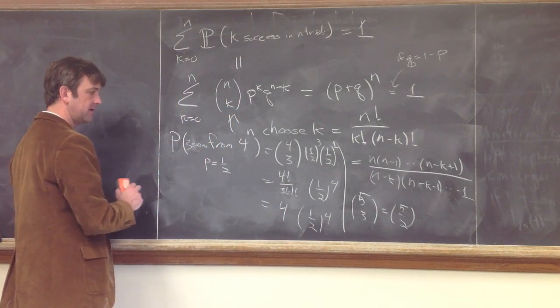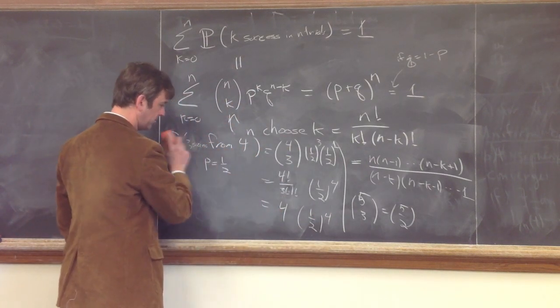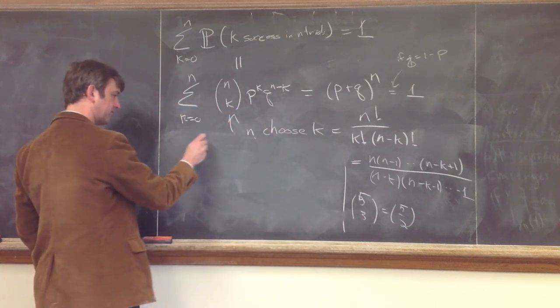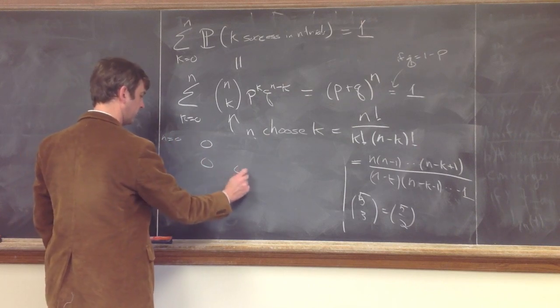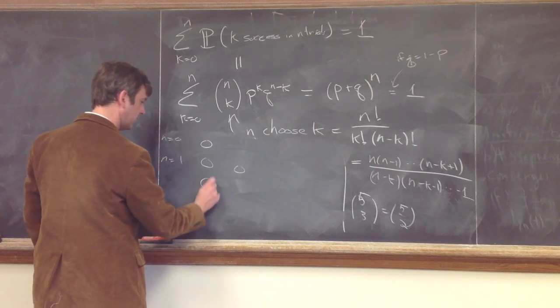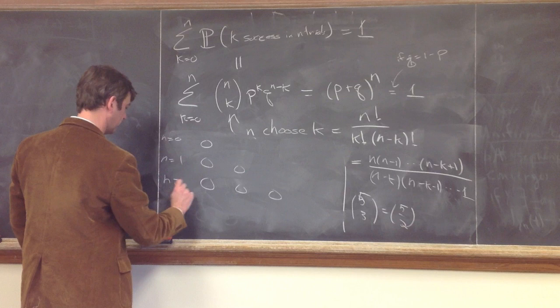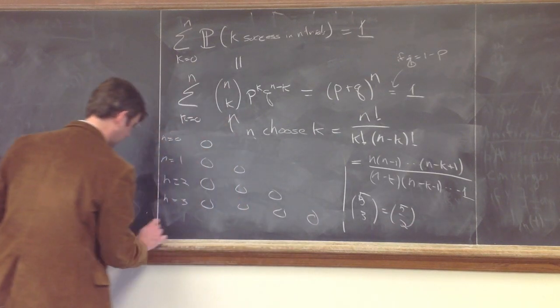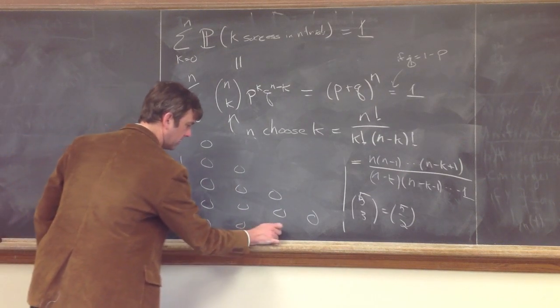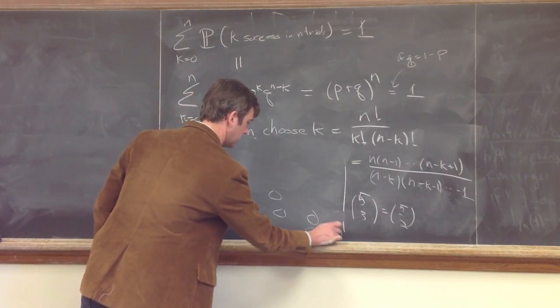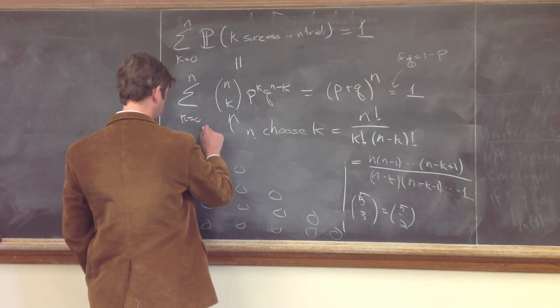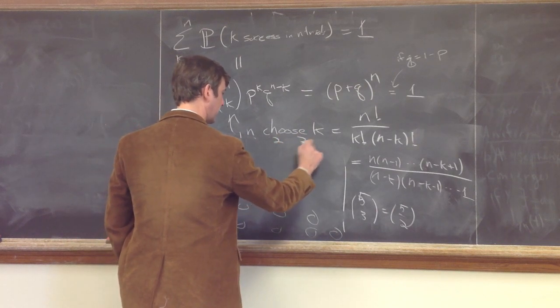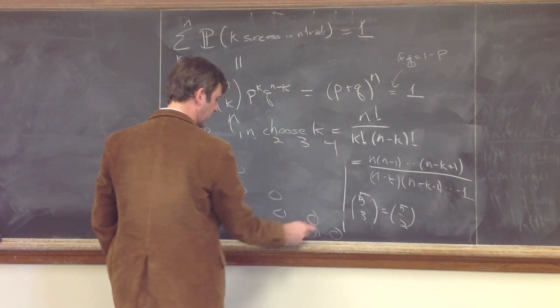And as I said, this number here, 4 choose 3, just counts the number, where we had these circles up on the board. This is the n equals 0 level, this is the n equals 1 level, this is the n equals 2 level, this is the n equals 3 level, and finally the n equals 4 level, and I want to look at k equals 0, 1, 2, 3, 4.